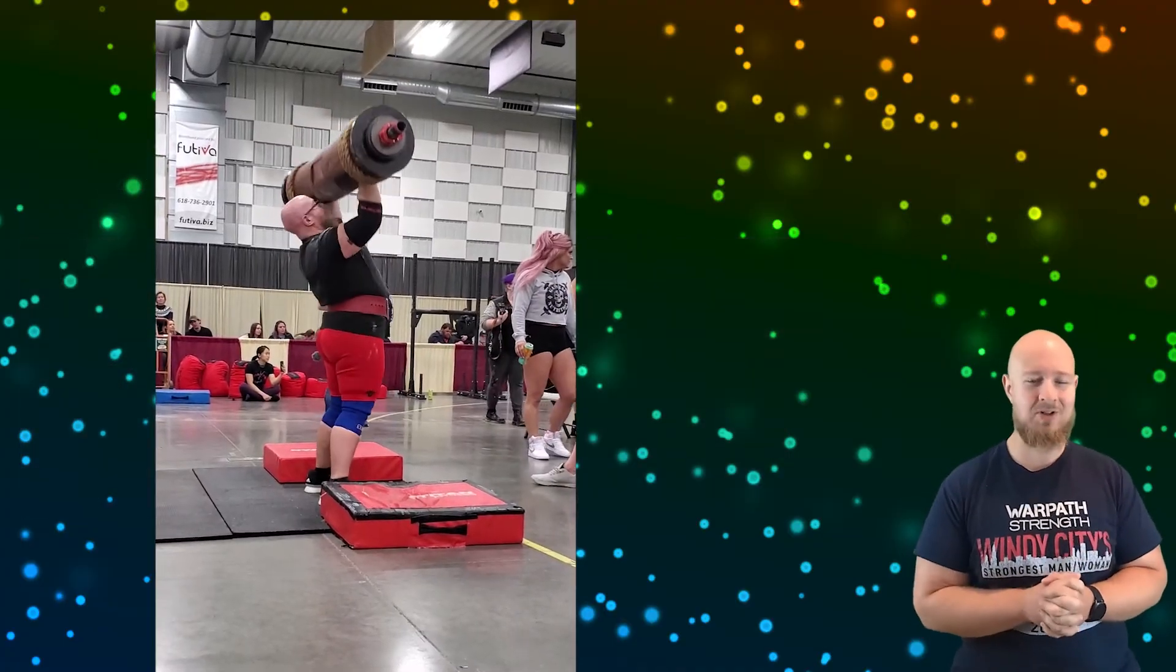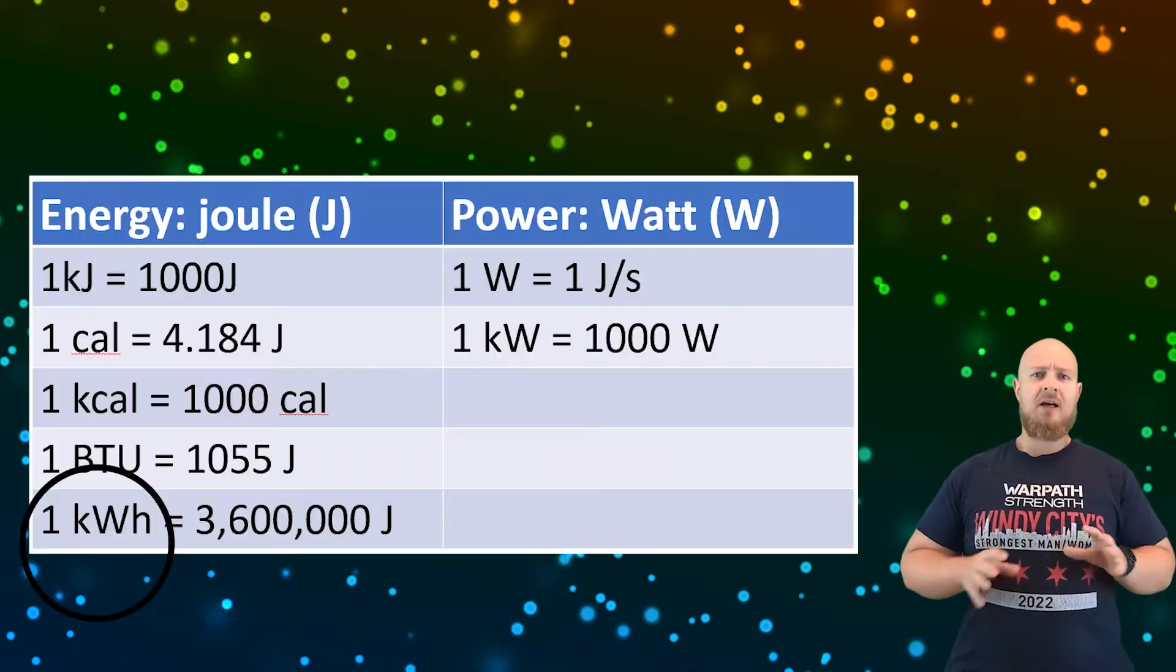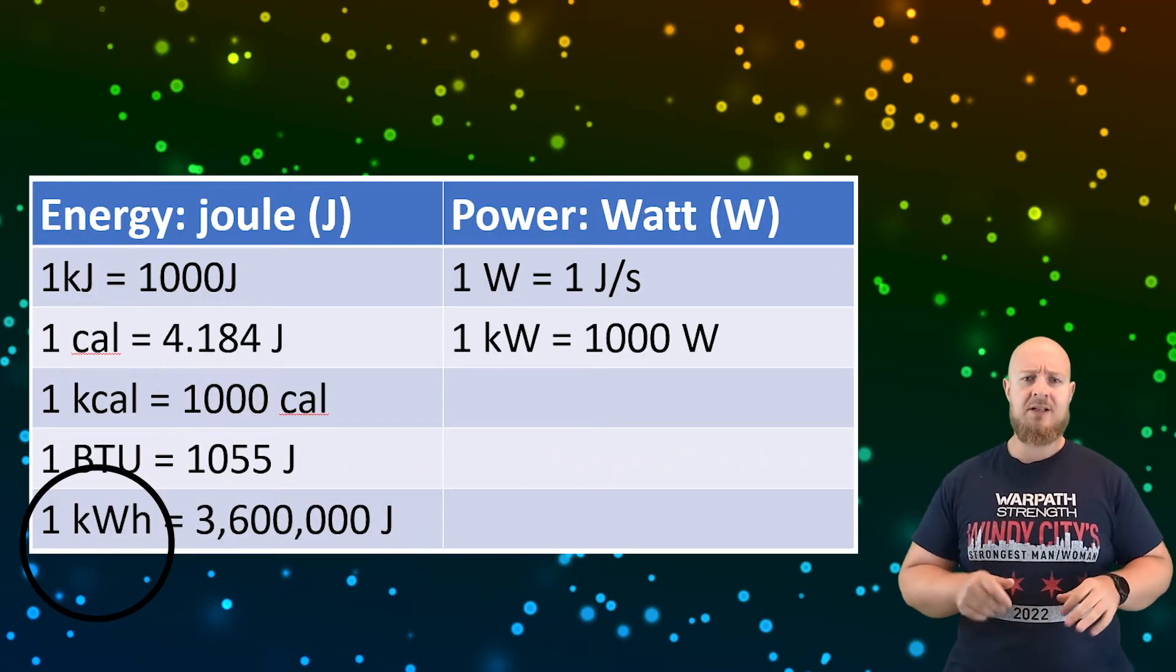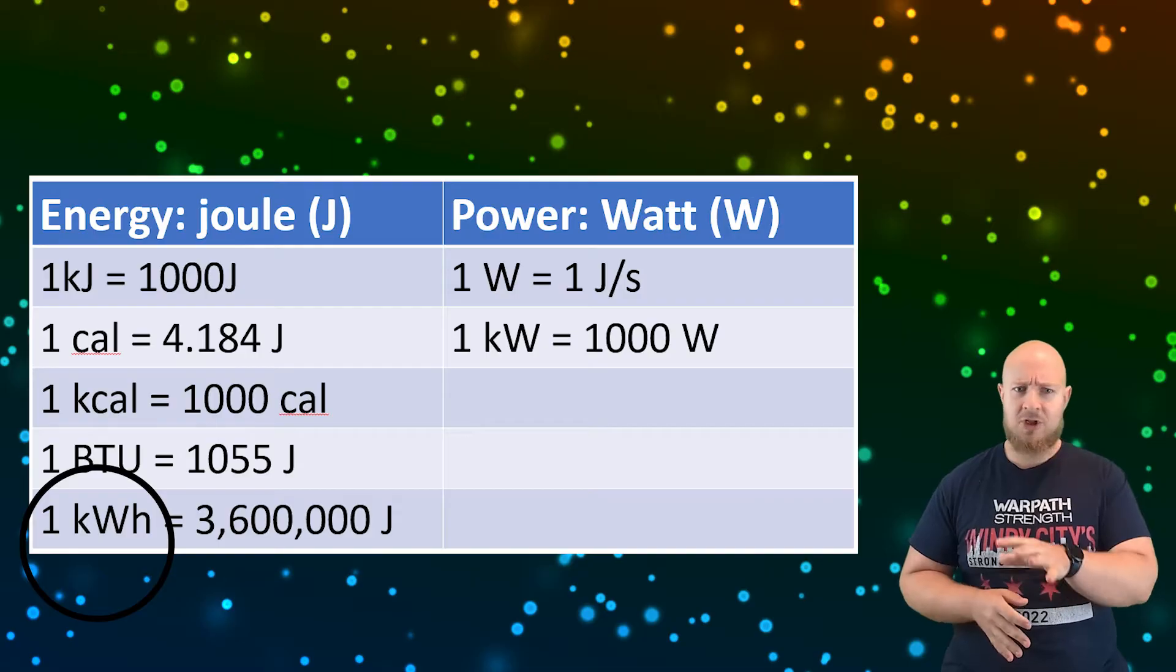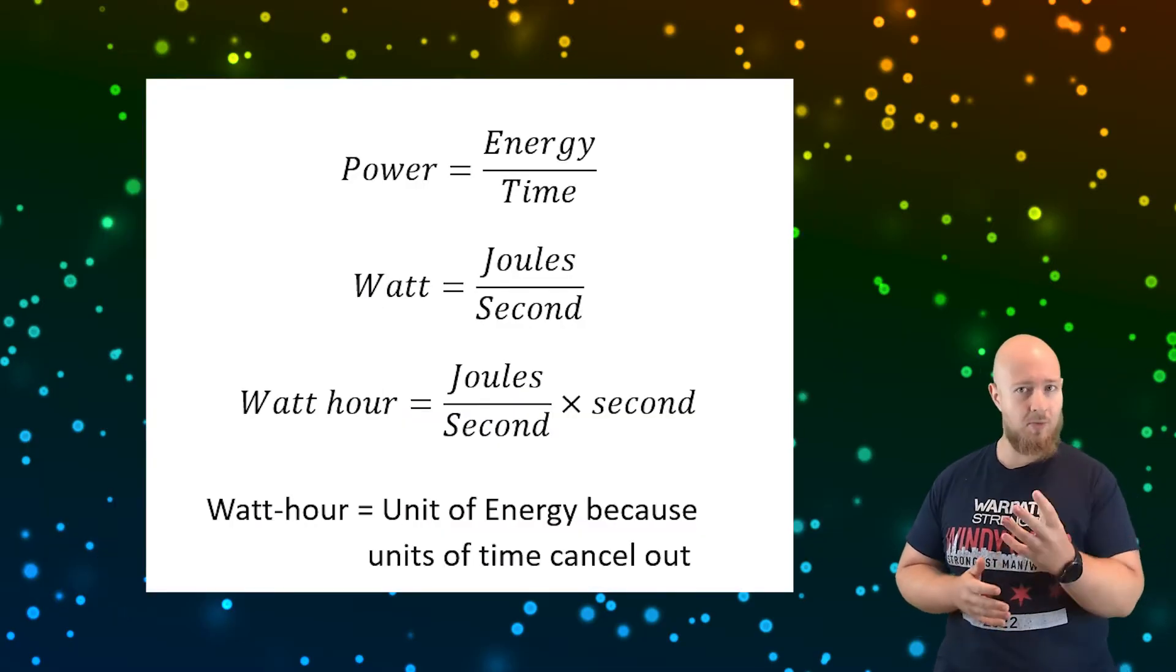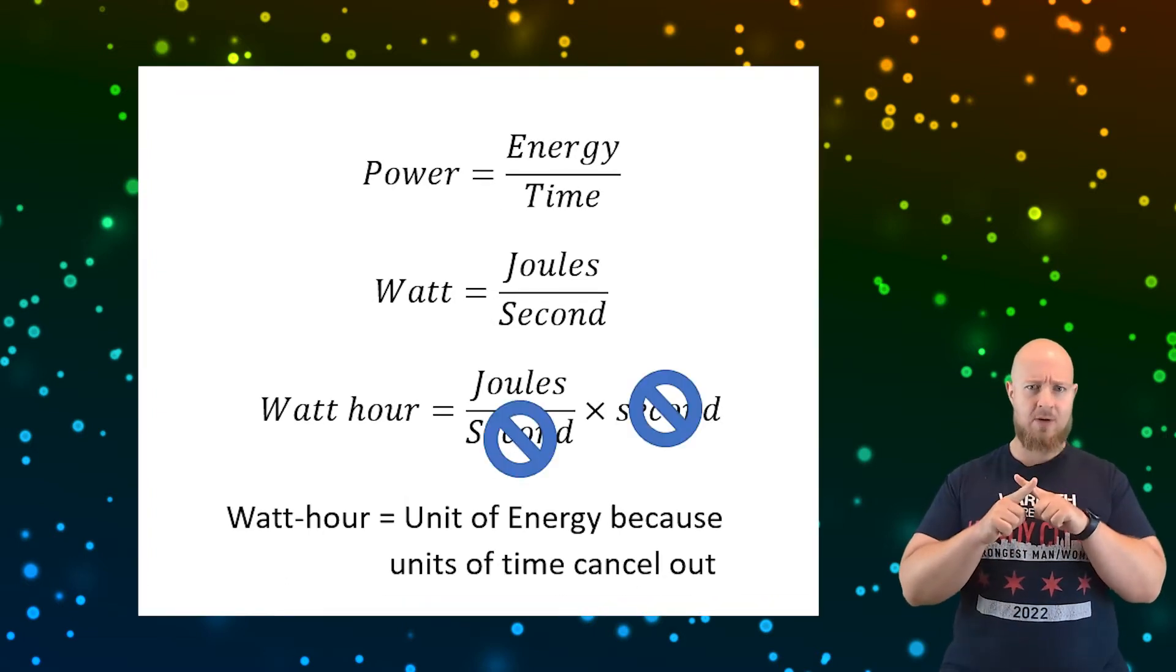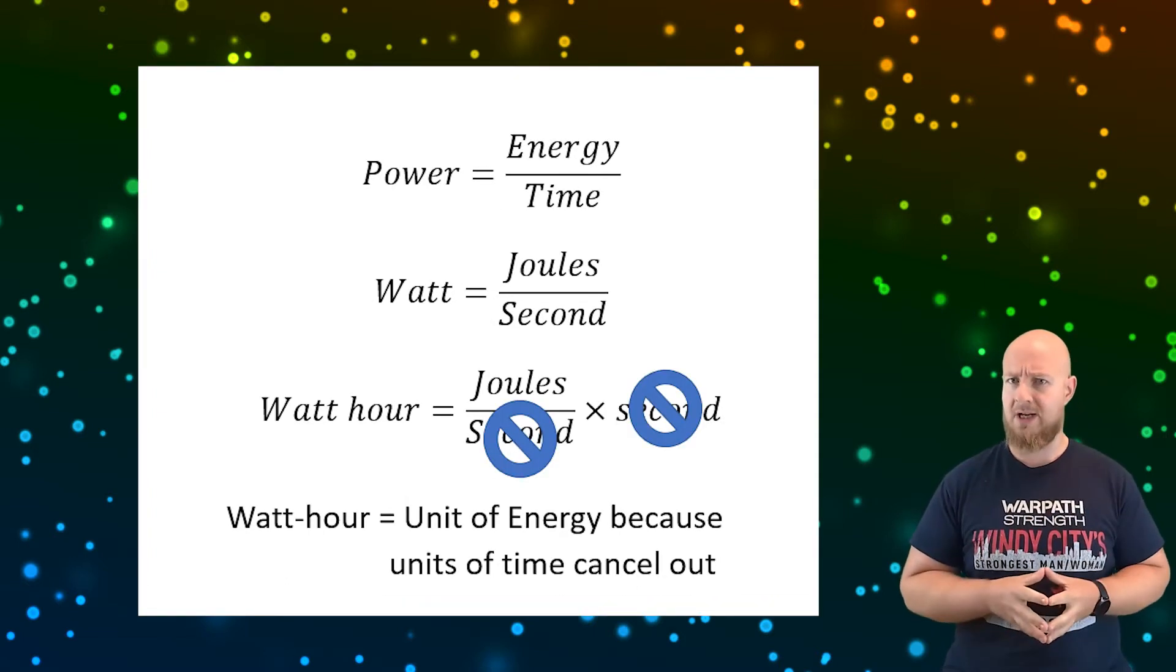I do however want to go back to the idea of the kilowatt hour. It's a unit of energy, not a unit of power, because you're taking a unit of power - the watt - and multiplying it by a unit of time. Those units cancel out and you're left with only a unit for energy. This is in my opinion a cursed unit that shouldn't exist. All of science and engineering would improve if we all just use megajoules as our unit for energy rather than kilowatt hours.